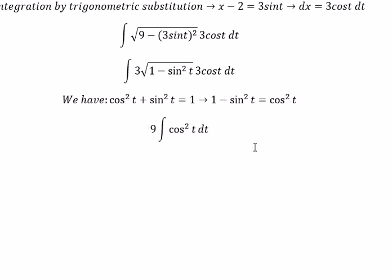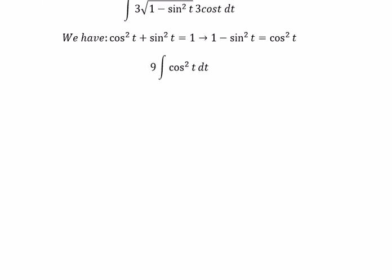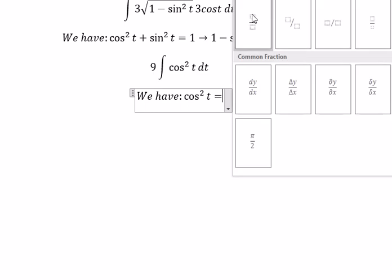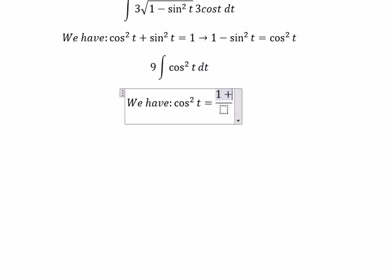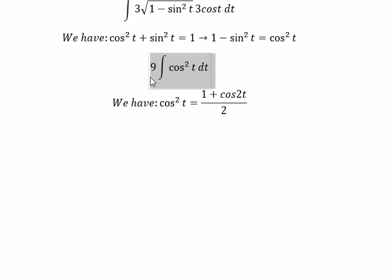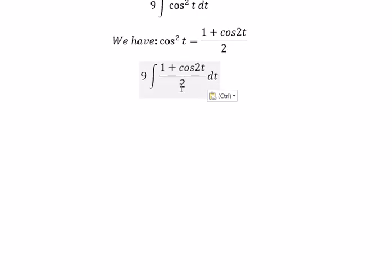Next, we have cosine t squared equals to 1 plus cosine 2t over 2. And now we move number 2 outside, and we got 9 over 2.